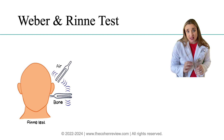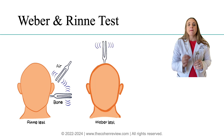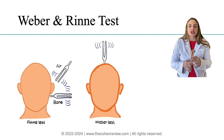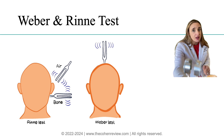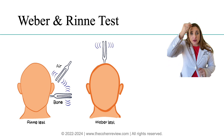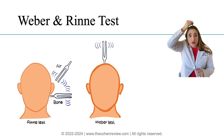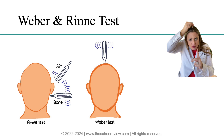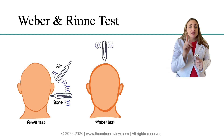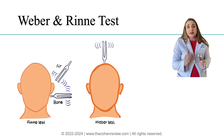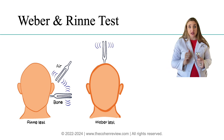The Weber test is performed by striking the tuning fork gently on a hard surface to produce a ringing sound. You place the vibrating tuning fork over the midline of the patient's head, typically on top of the head. Then you ask the patient to report which ear the sound is louder in, or if it's equal in both ears.